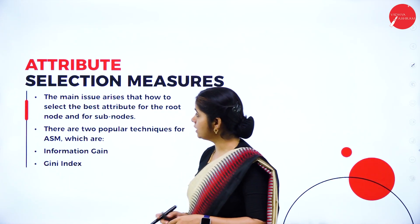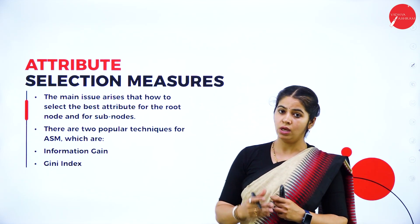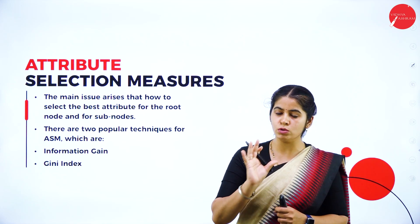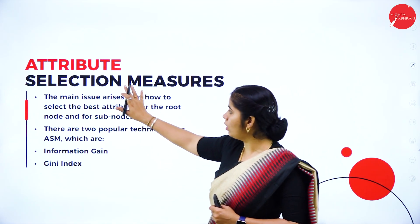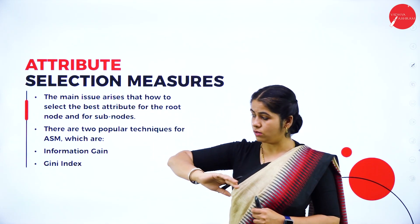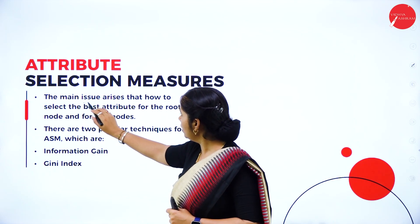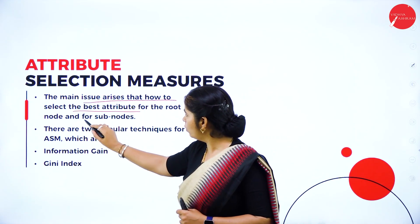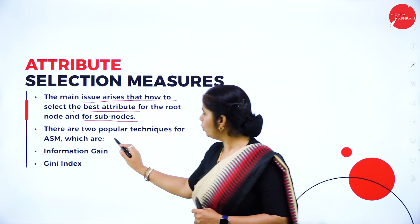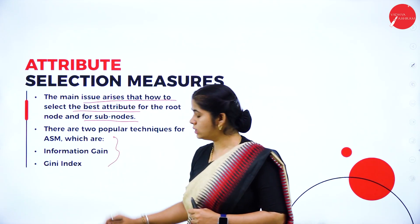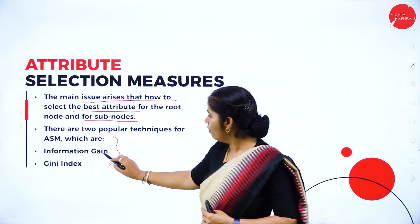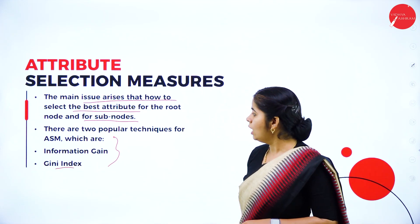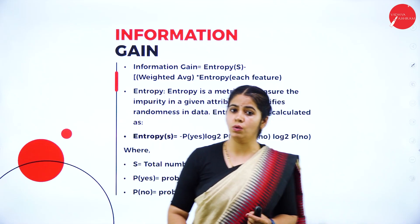Next, Attribute Selection Measures. The main issue is how to select the best attribute from the root node to the sub-node. There are two main techniques: finding the Information Gain and the Gini Index.